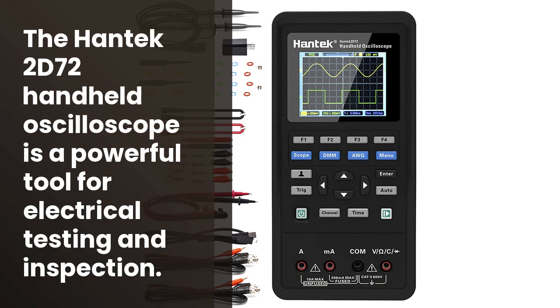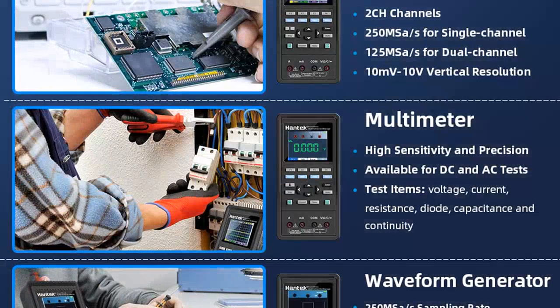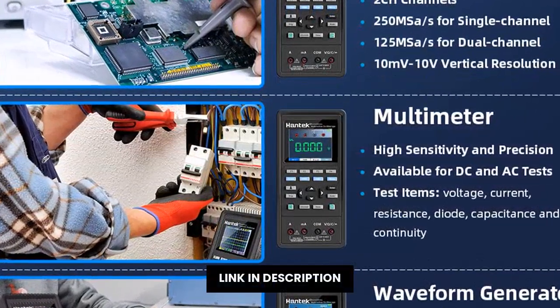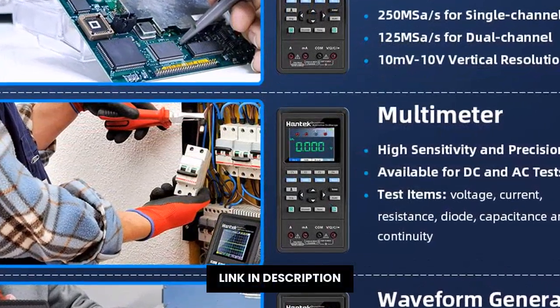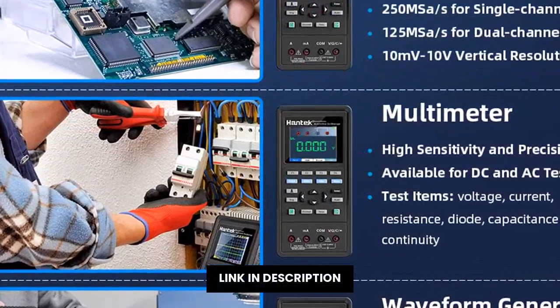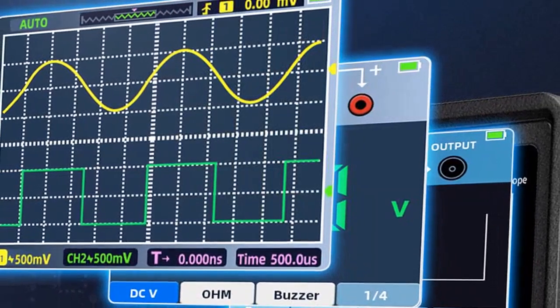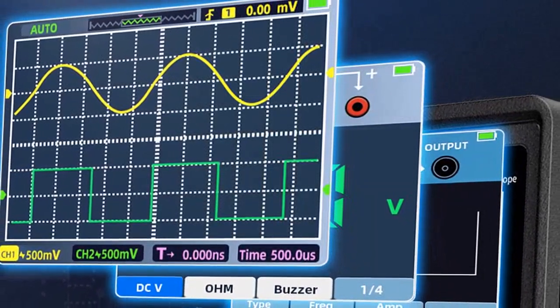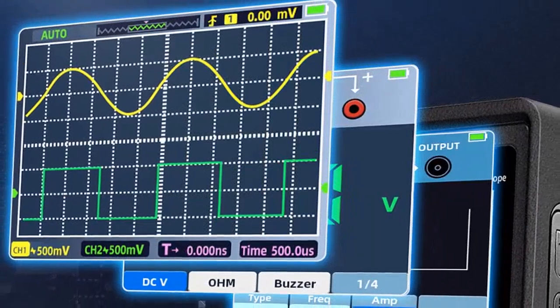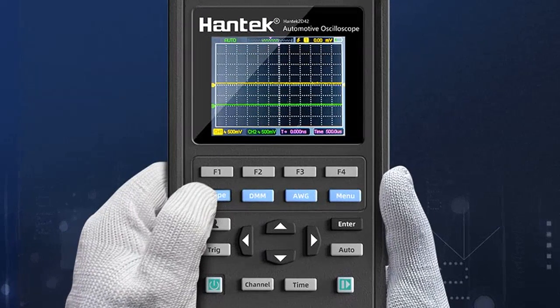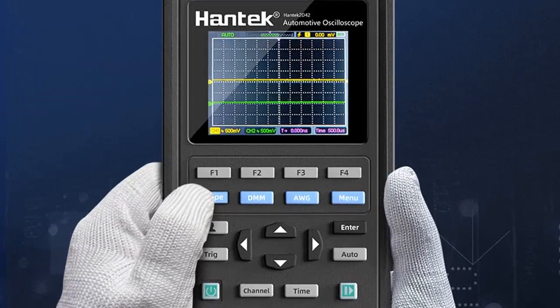If you're looking for a multifunctional tool for testing, measuring and inspecting electrical circuits, then the Hantek 2D72 handheld oscilloscope 70MHz waveform generator multimeter 3-in-1 multifunction tester 2CH plus AFG plus DMM is the best option. This equipment has a variety of functions that allow you to perform all types of electrical tests and measurements.